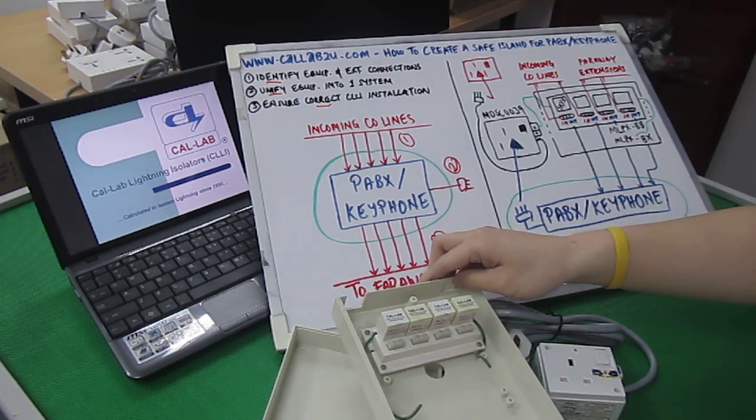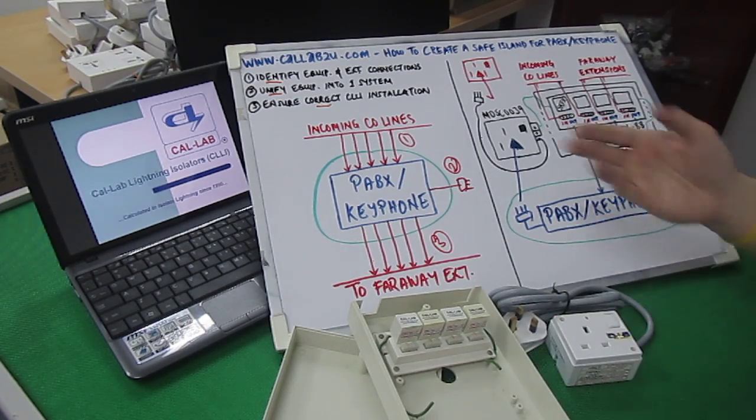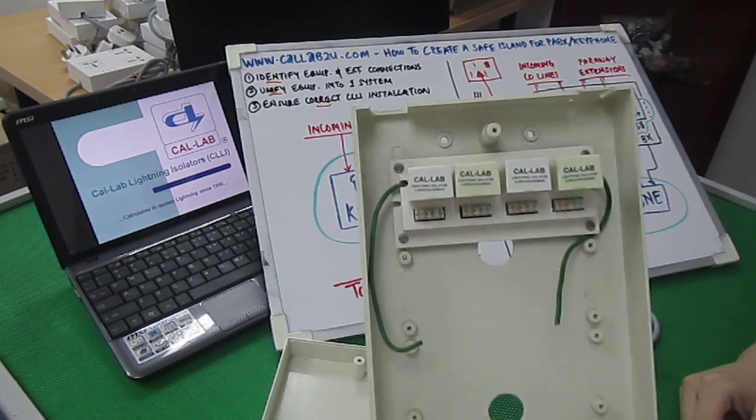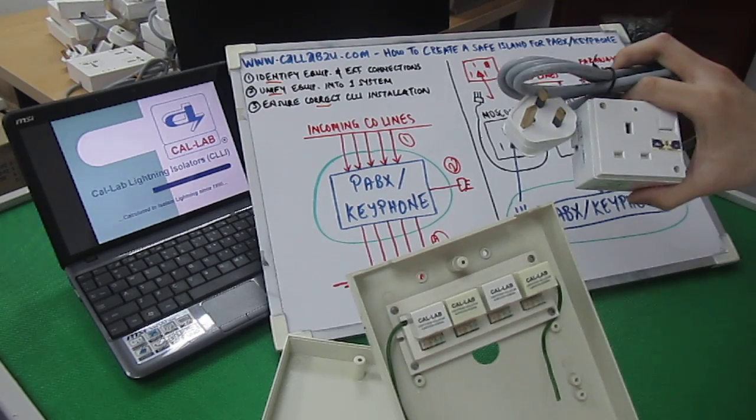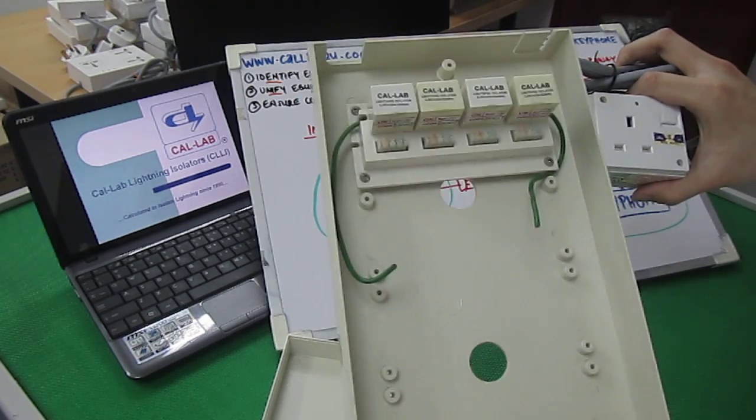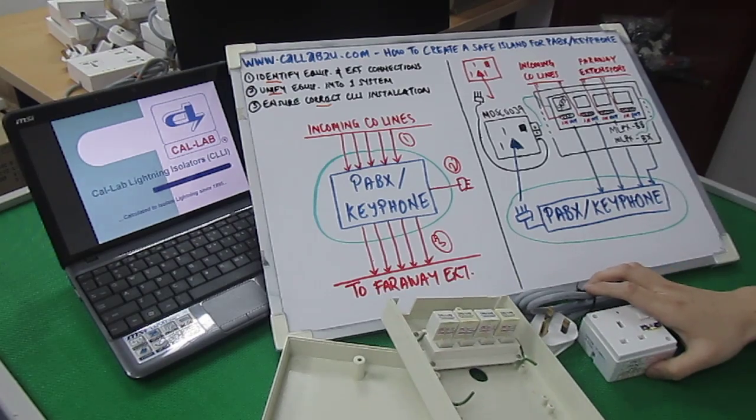So, this is how you create a safe island for your PABX or key phone system using the MLPX series and the MDSC0039. Thank you for your time, and stay tuned for the next segment.